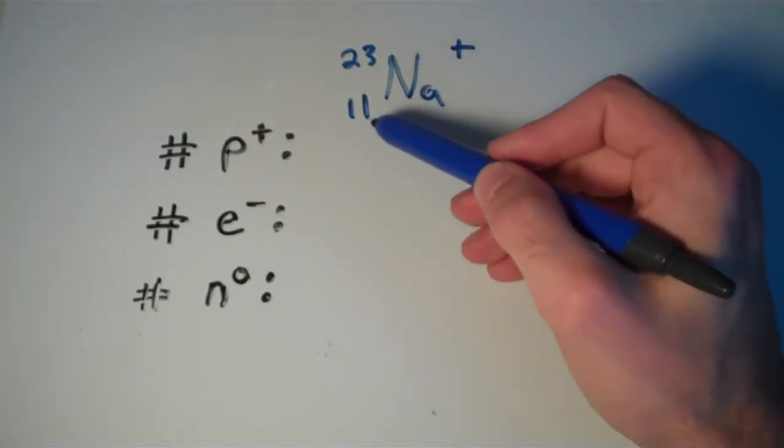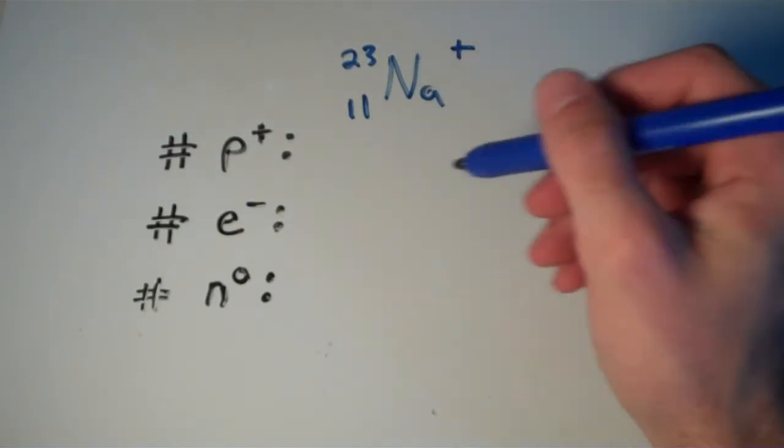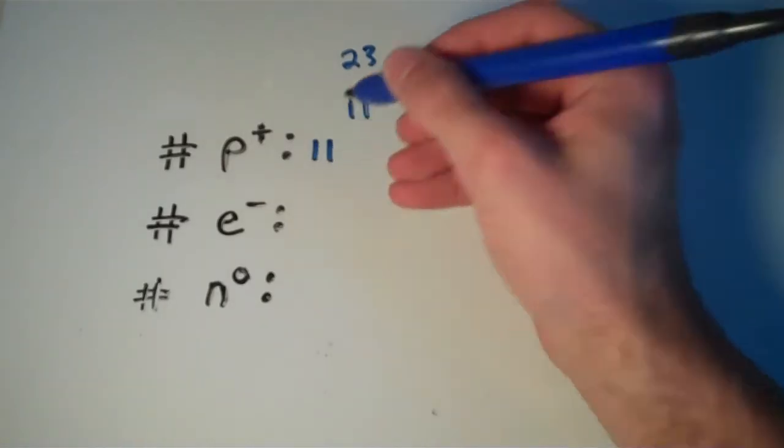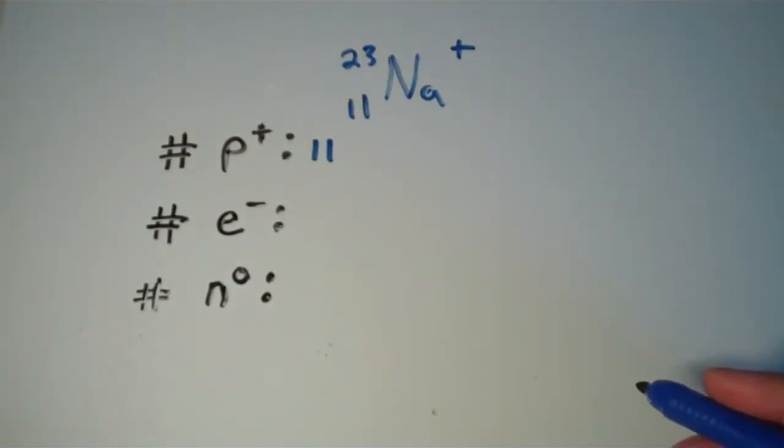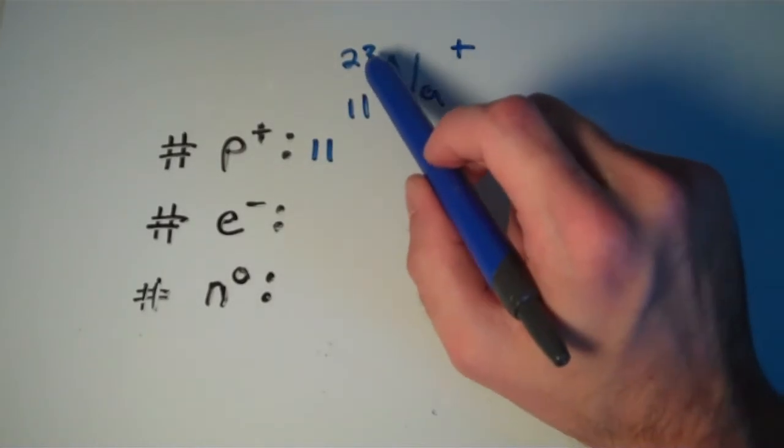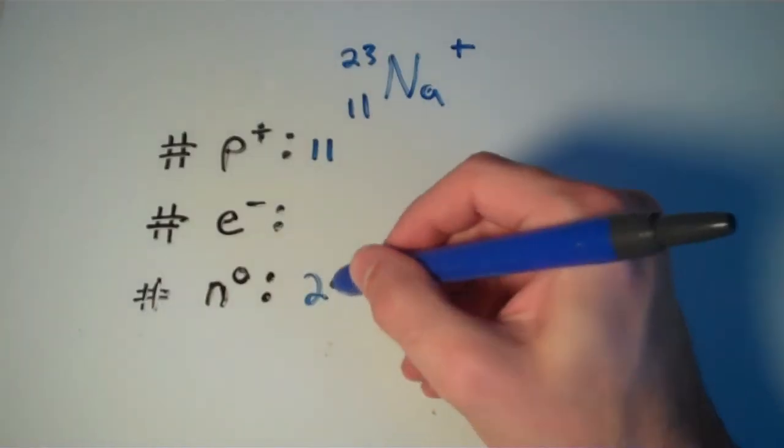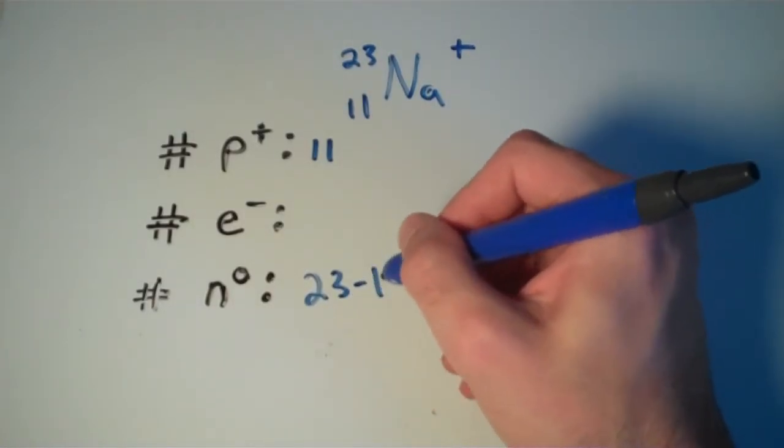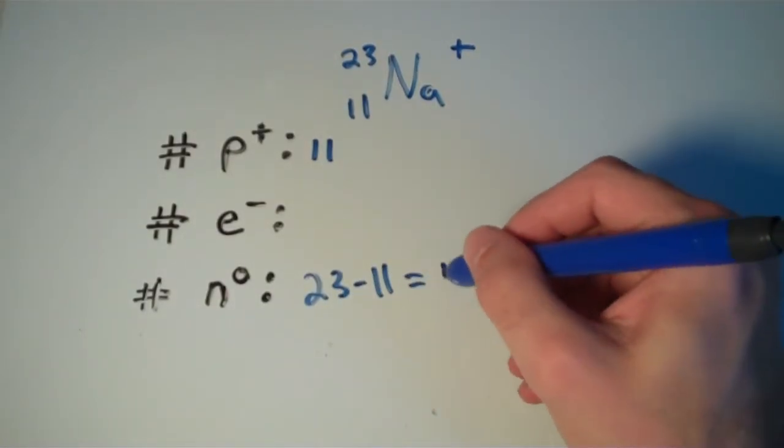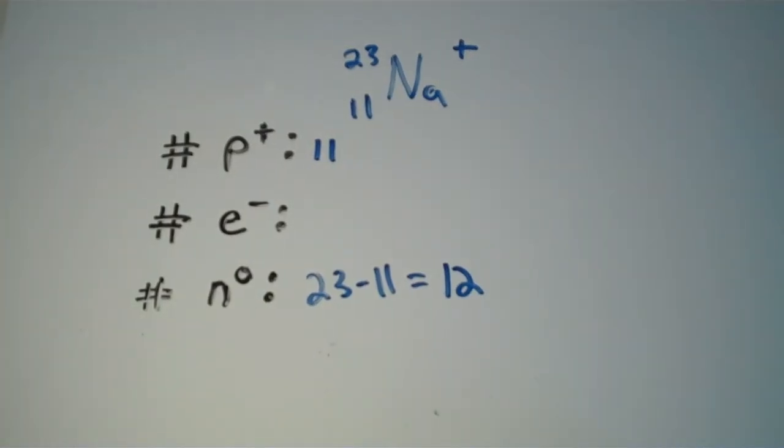The number of protons is the atomic number shown here at the bottom left, so that's just going to be 11. The number of neutrons, once again, is obtained by subtracting the mass number from the atomic number. So, 23 minus 11, or 12, 12 neutrons.